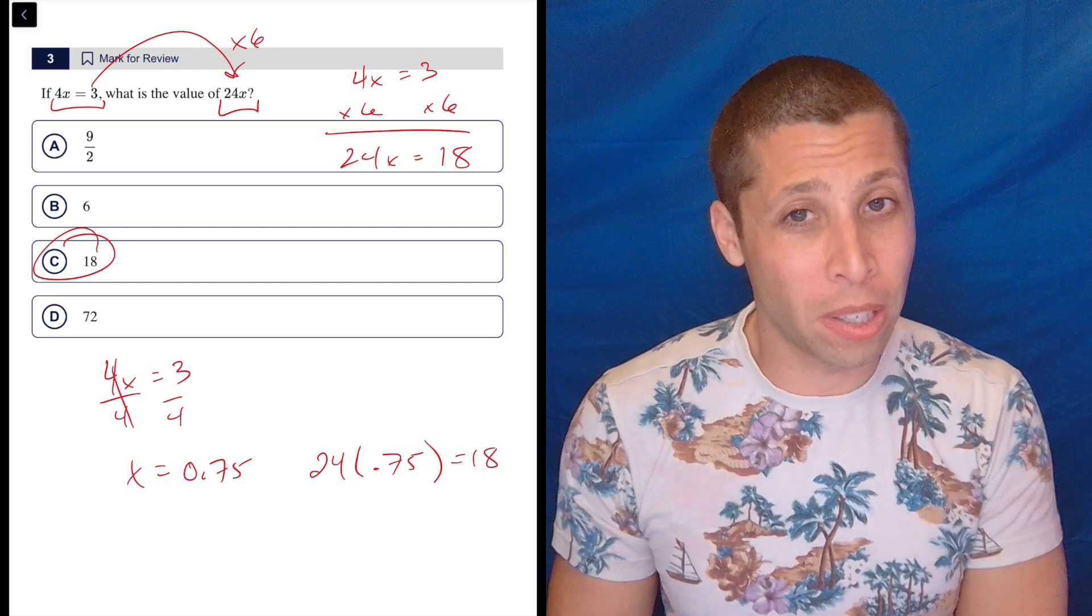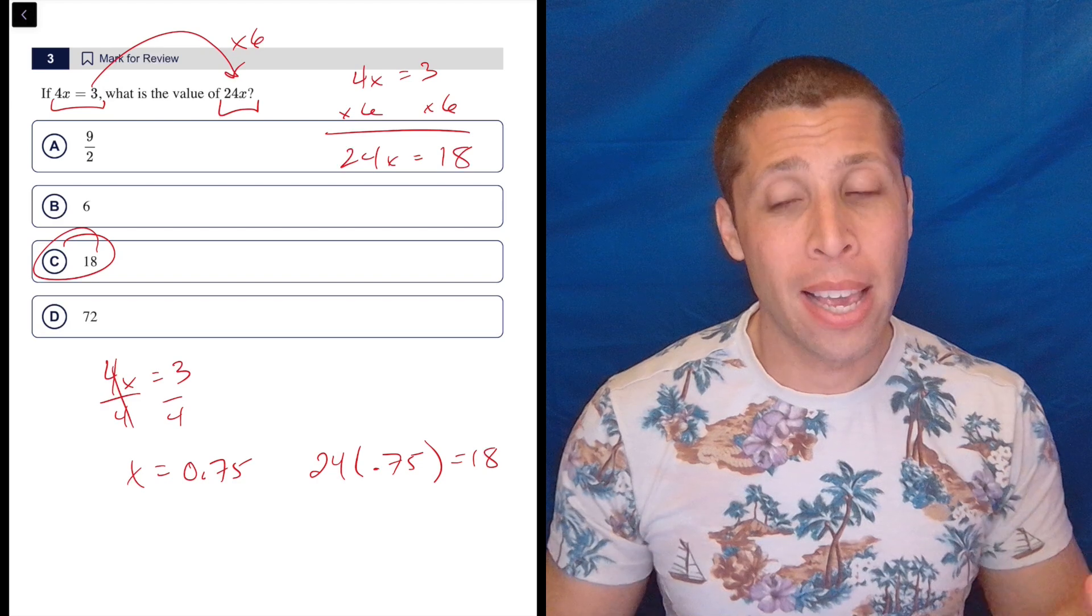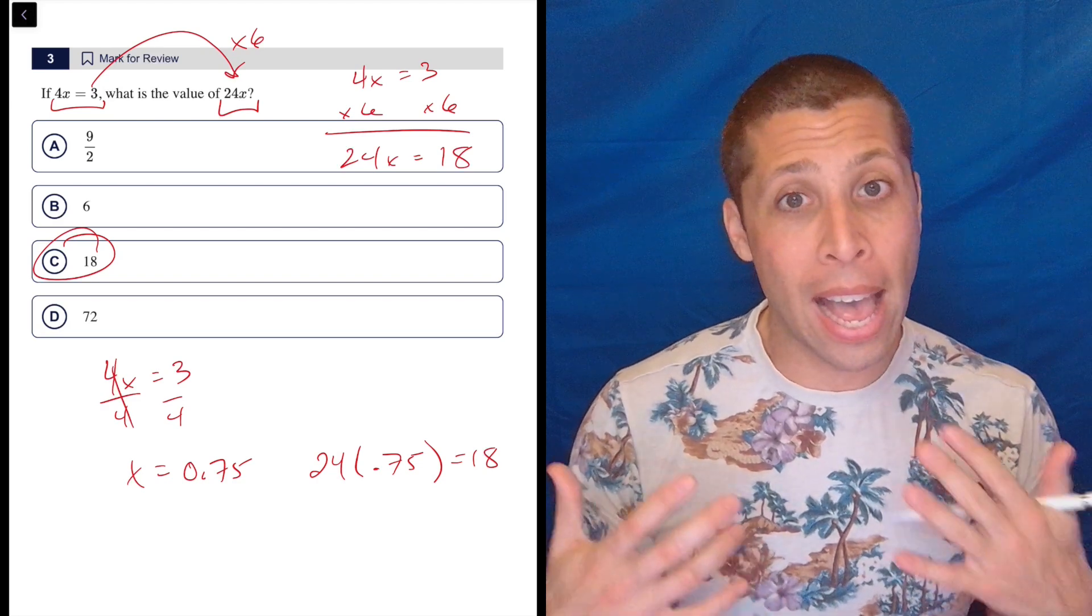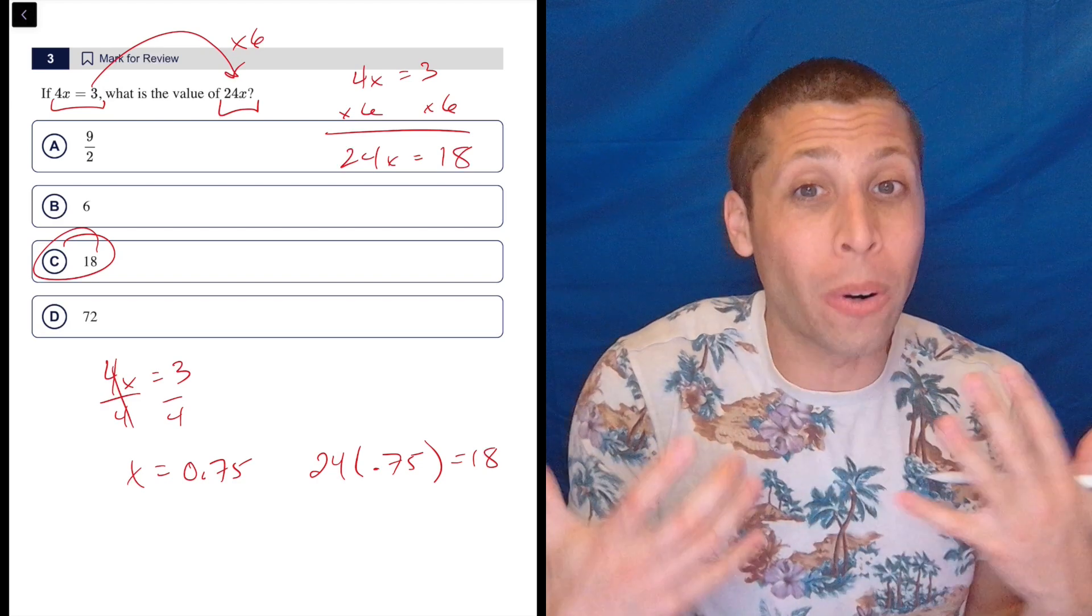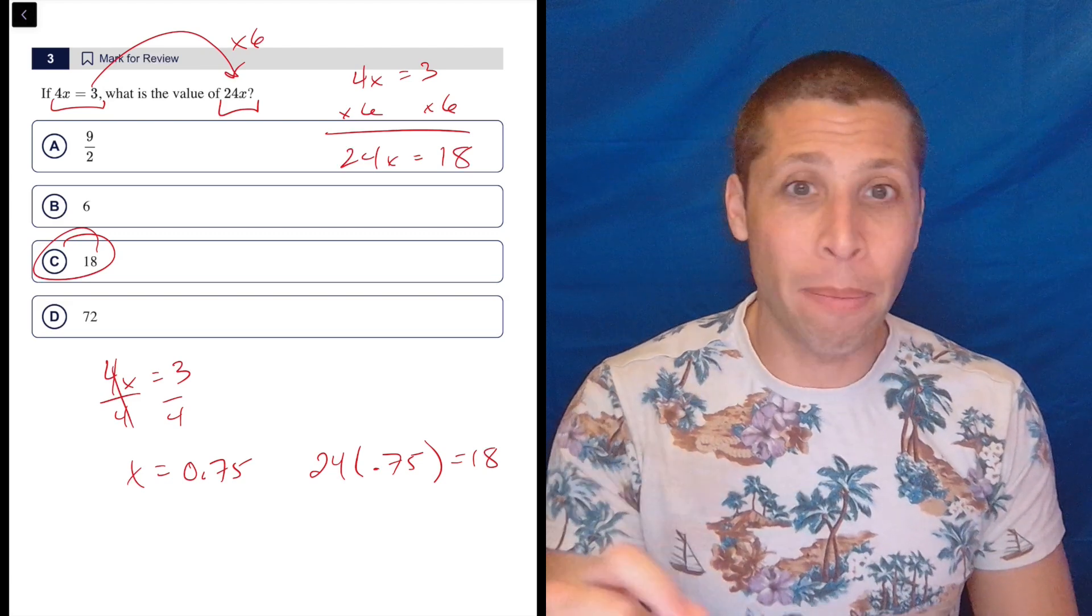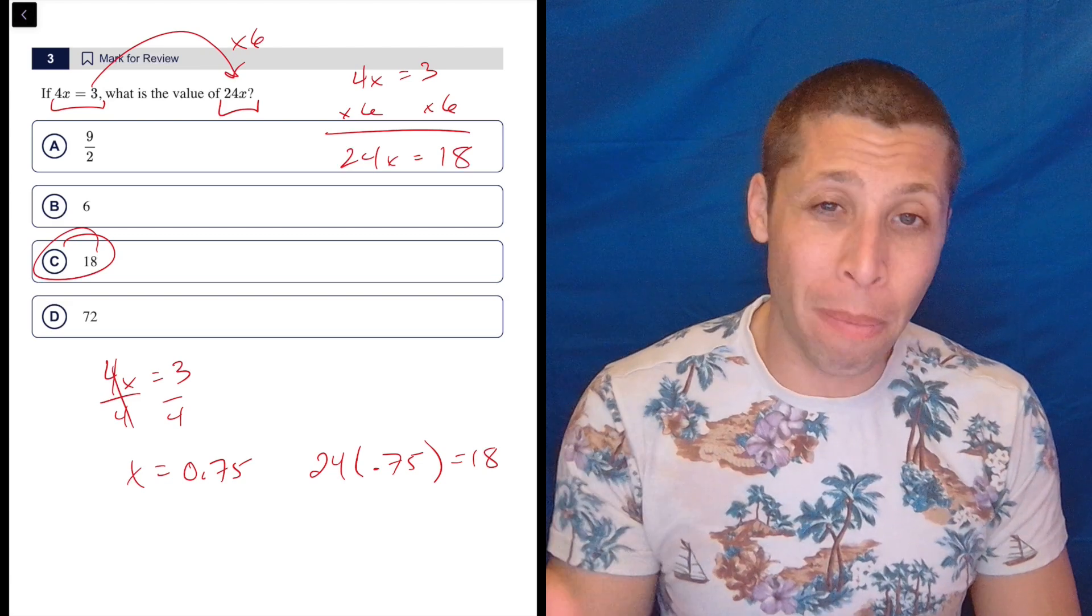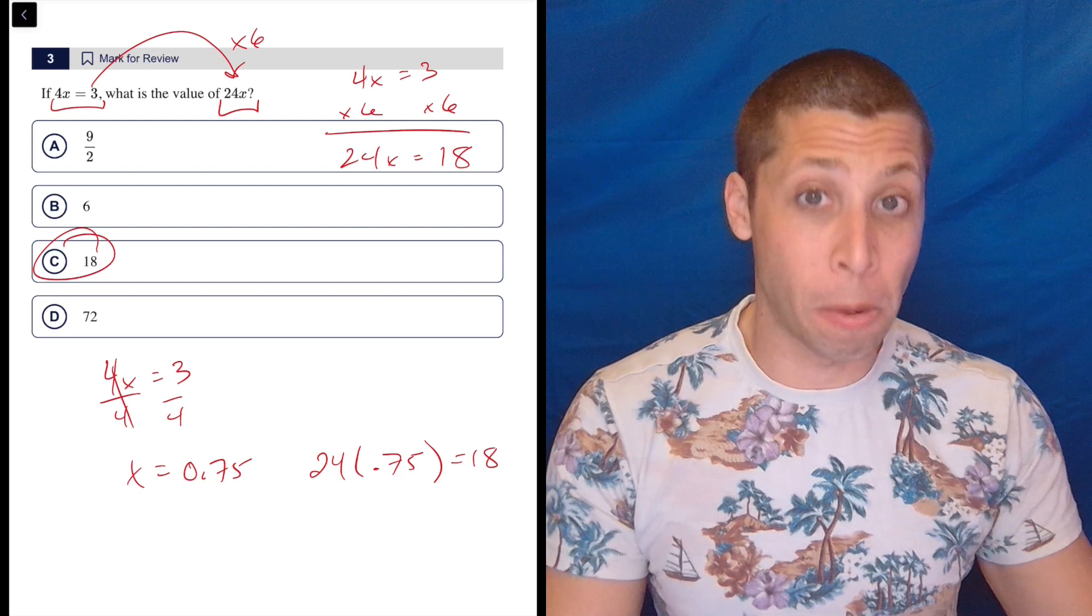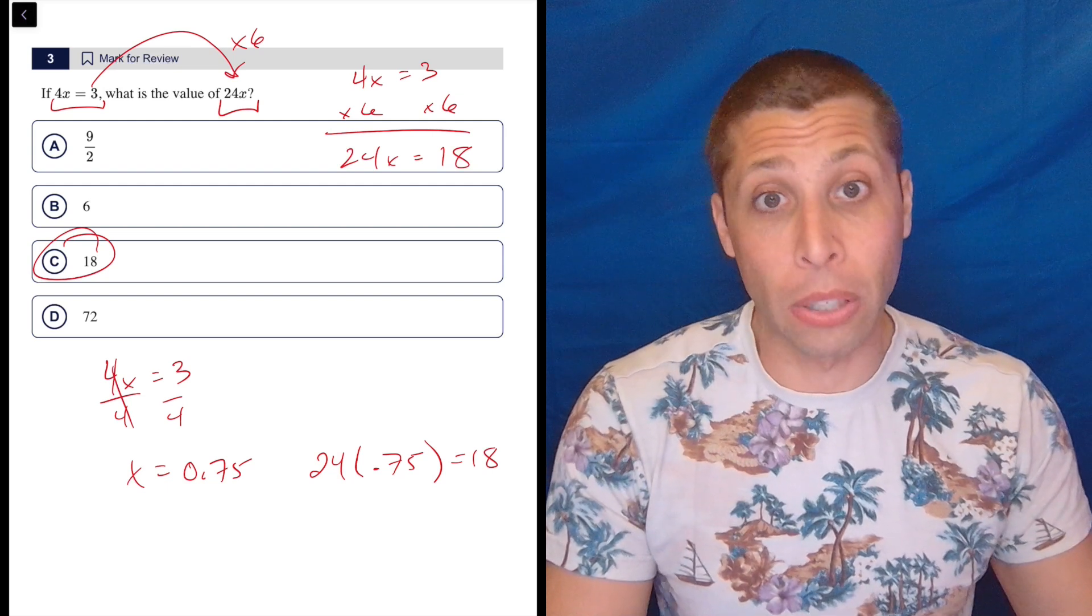A lot of math is about just noticing patterns and noticing that 4 and 24 have a pattern, have a 6 in common basically to get us from one to the other. That's the kind of basic arithmetic and maybe mental math that we're going to need for some of the harder patterns that are going to be much more difficult to spot.